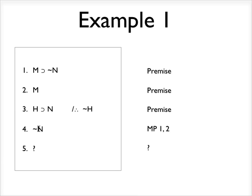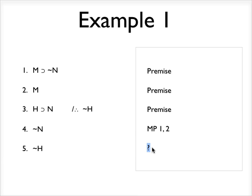Now, what can I do? Well, now I have not N. And if I look at lines three and four, then I should see a modus ponens there, right? That will allow me to, if I use modus ponens and apply that to lines three and four, I can derive not H here by modus ponens on three and four.